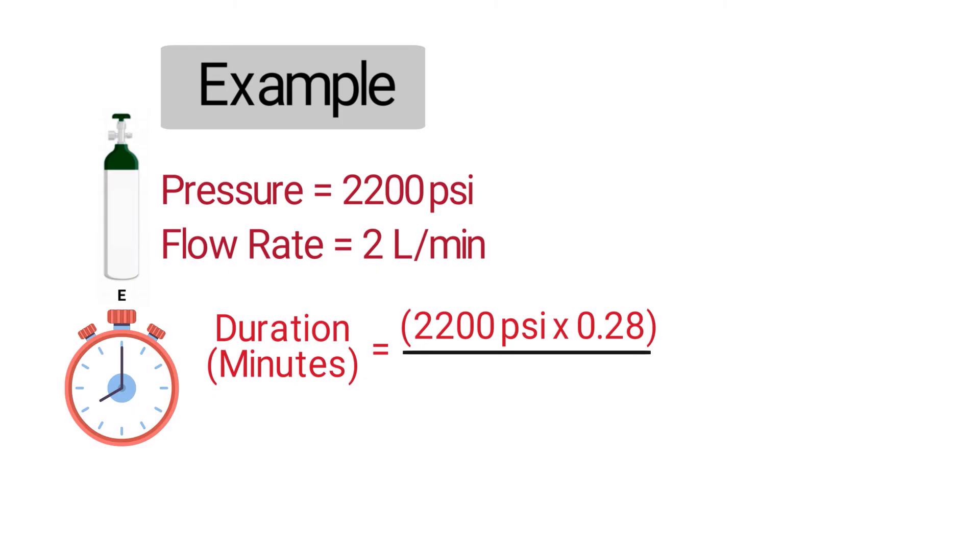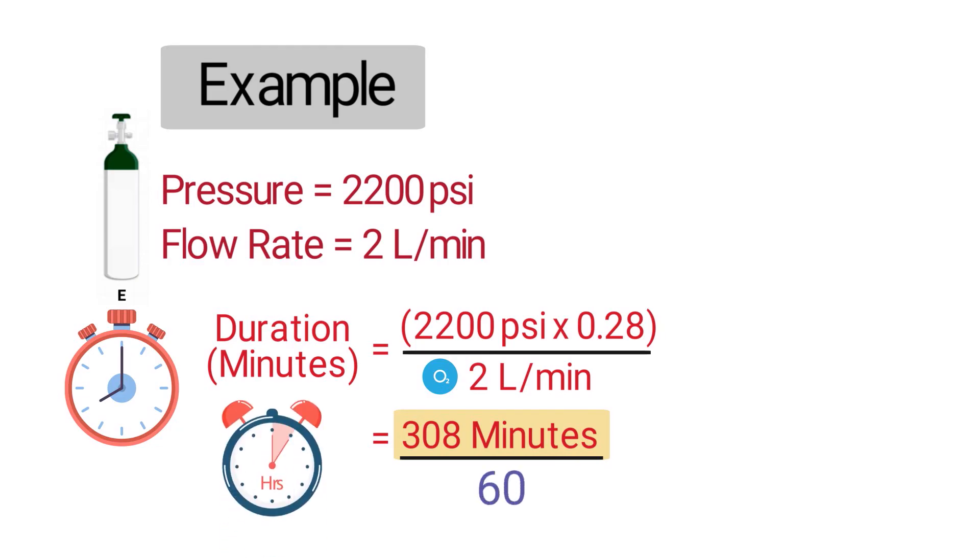This will equal 308 minutes, which tells you approximately how long this tank will continue to deliver oxygen at a rate of 2 liters per minute. However, we can divide this number by 60 to convert minutes to hours. Therefore, this oxygen tank will last for approximately 5 hours and 8 minutes.